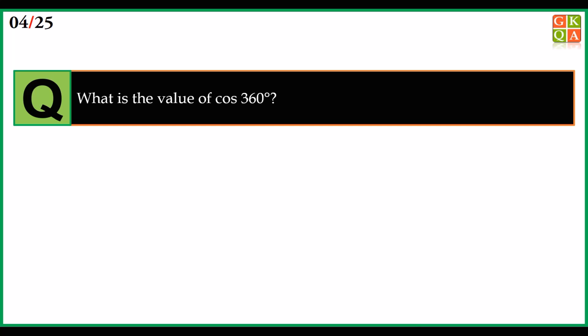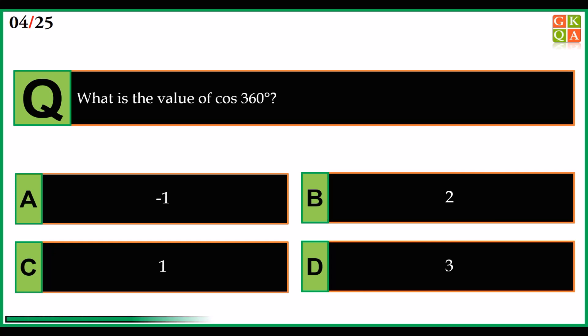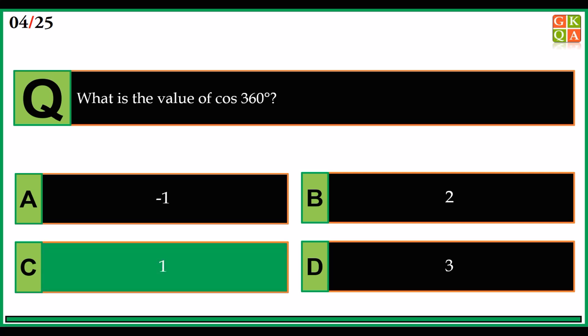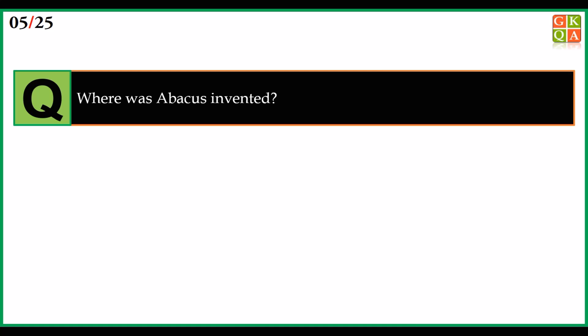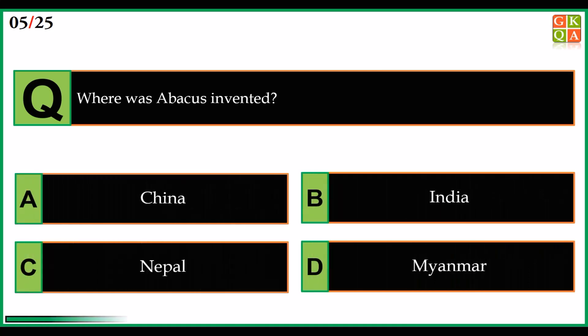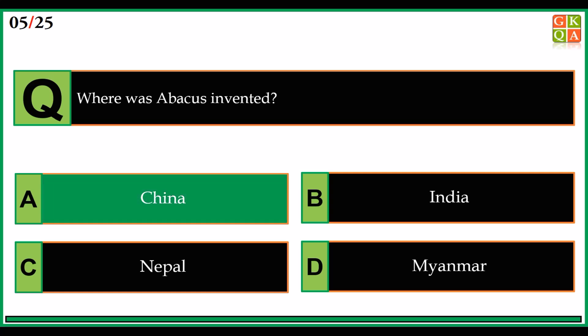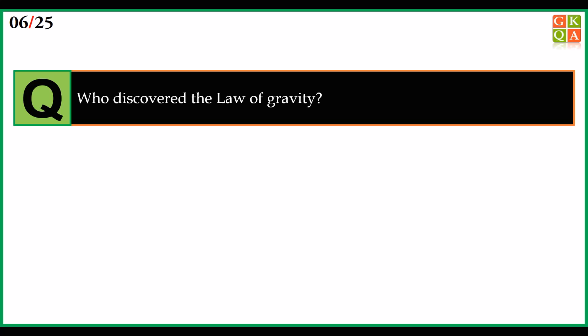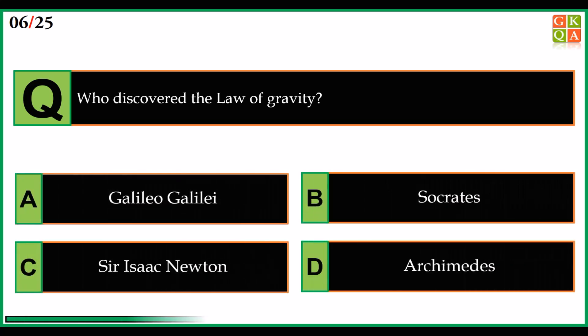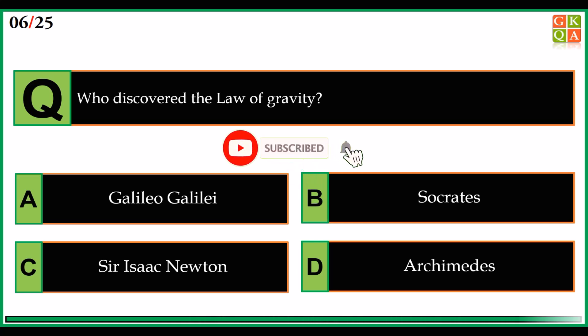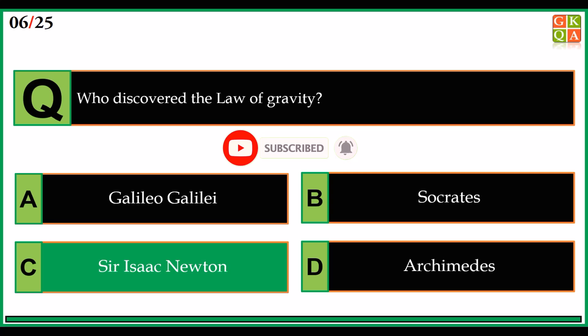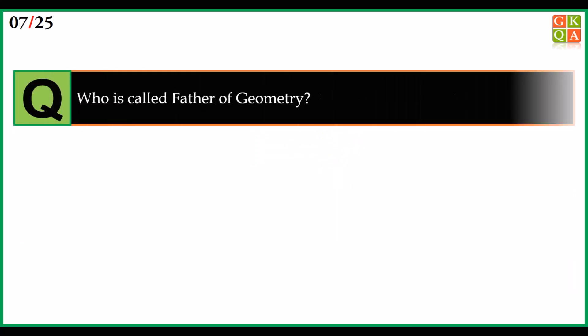What is the value of cos 360 degrees? Answer: option C, 1. Where was abacus invented? Answer: option A, China. Who discovered the law of gravity? Answer: option C, Sir Isaac Newton.